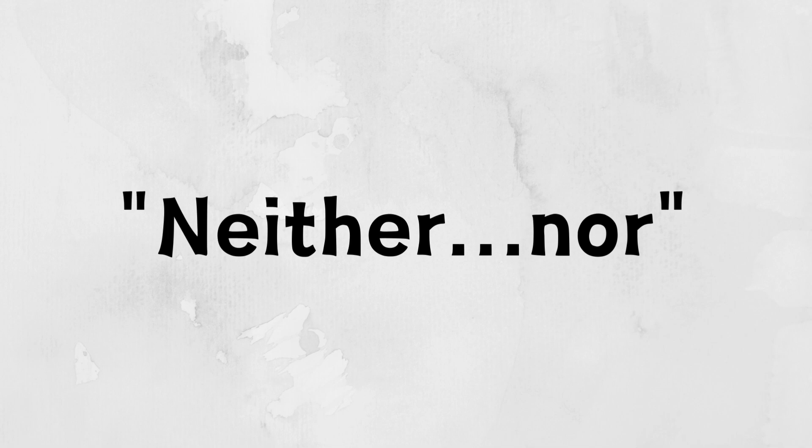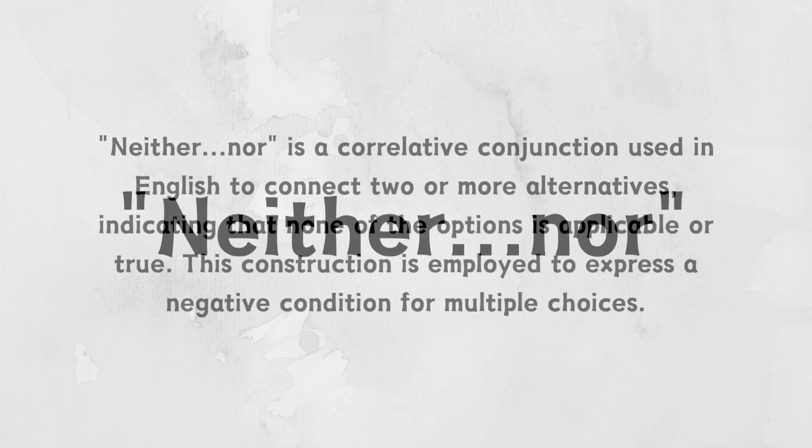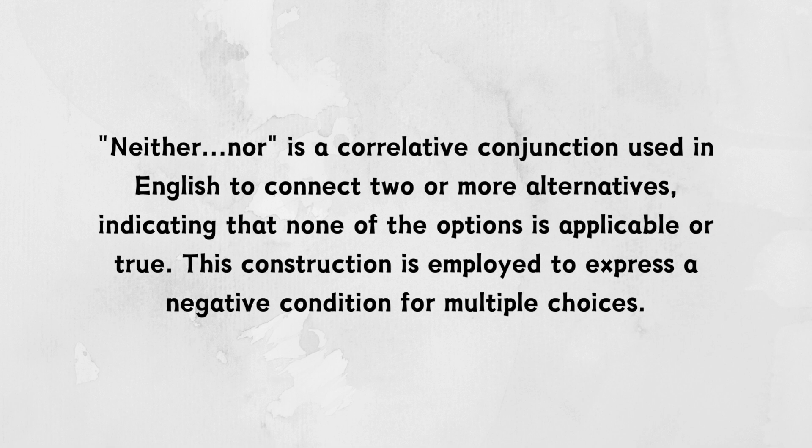Hi, today we are going to see 'neither...nor.' Neither...nor is a correlative conjunction used in English to connect two or more alternatives, indicating that none of the options is applicable or true. This construction is employed to express a negative condition for multiple choices.